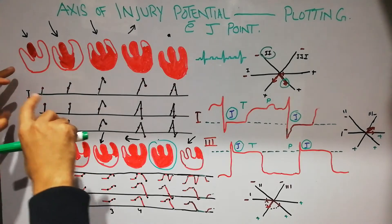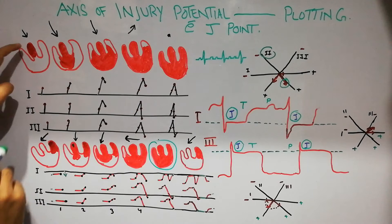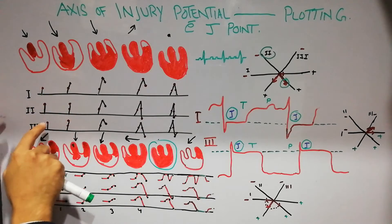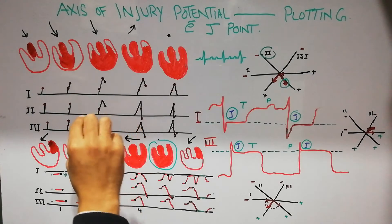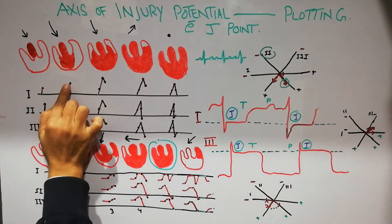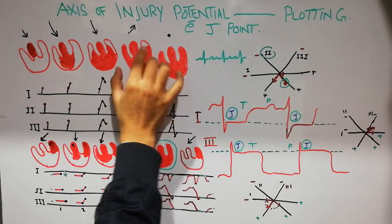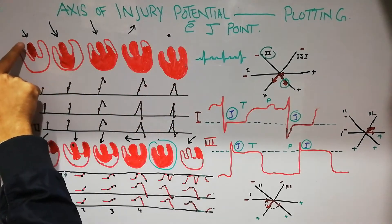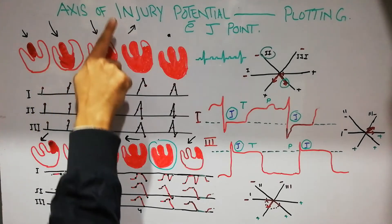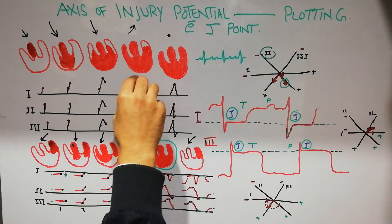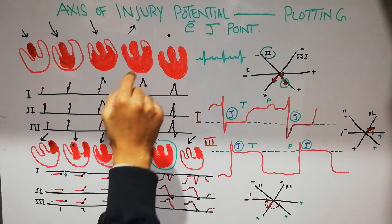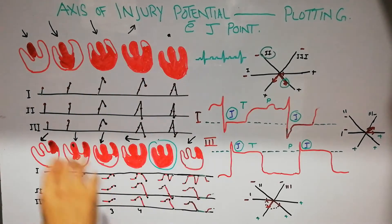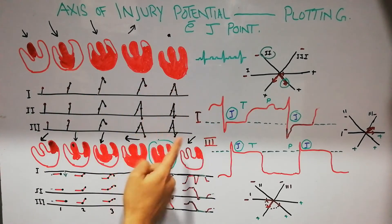Previously we discussed that when depolarization of the normal heart starts, it starts from the septum. The initial plotting, when done on the three bipolar limb leads — lead 1, lead 2, and lead 3 — gives rise to a small vector. When the depolarization spreads, the vector increases. When the whole heart has been depolarized, the vector which was initially directed downward turns towards the base of the heart. The size of the QRS complex and the vector on different leads then starts decreasing, resulting in a different appearance of the QRS complex on each lead.